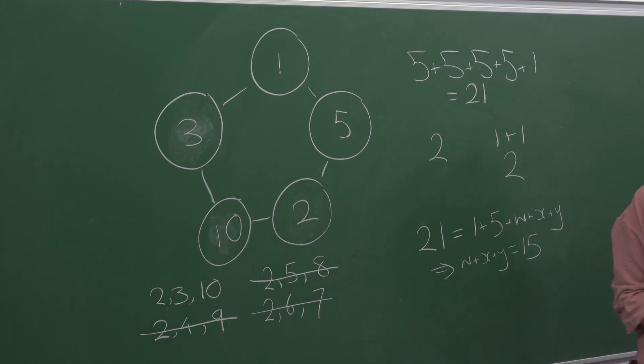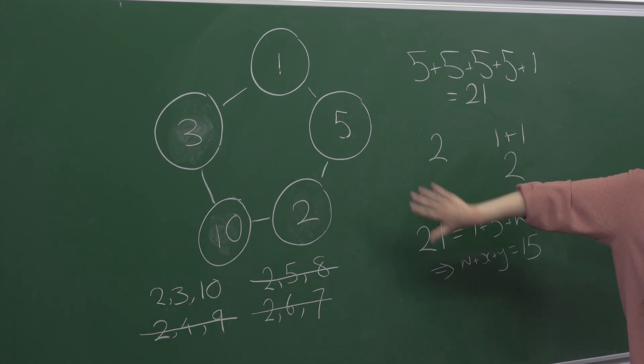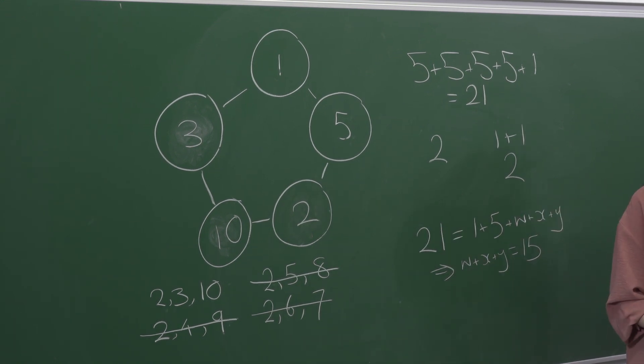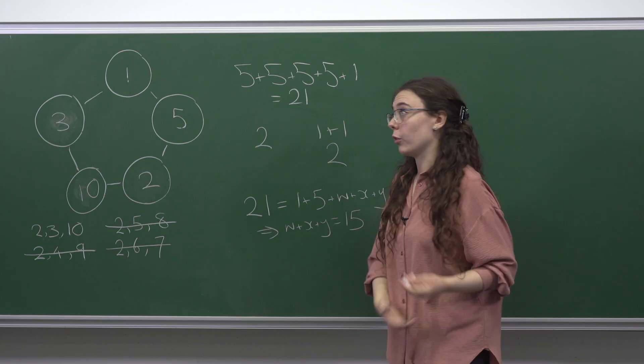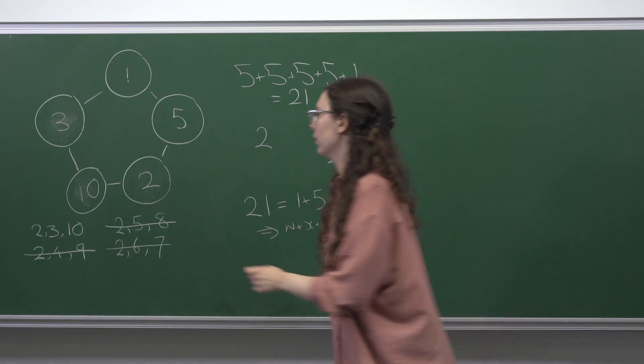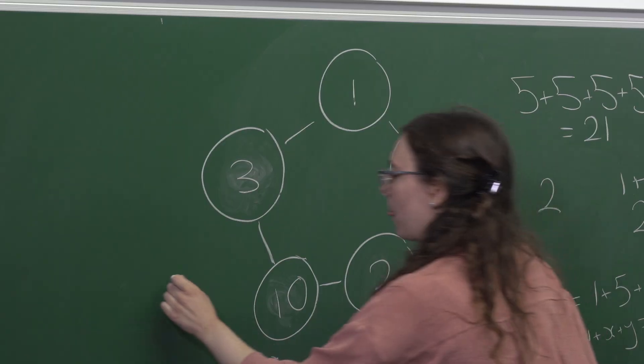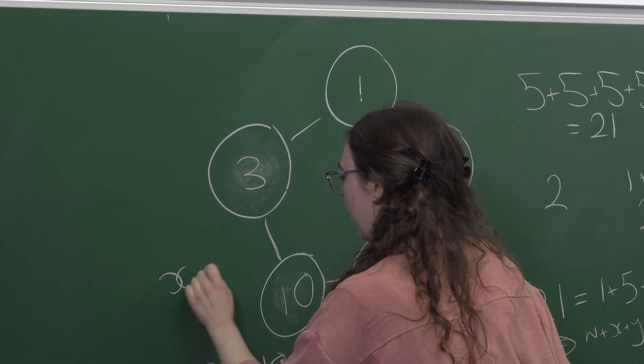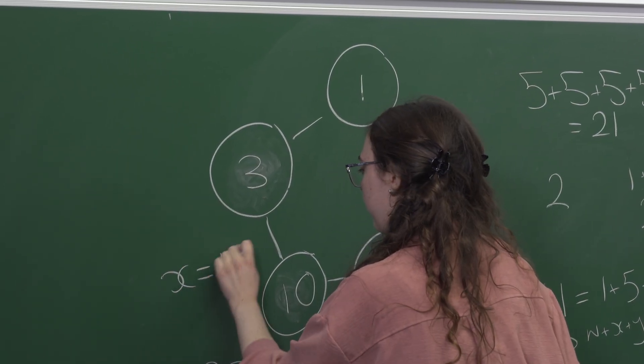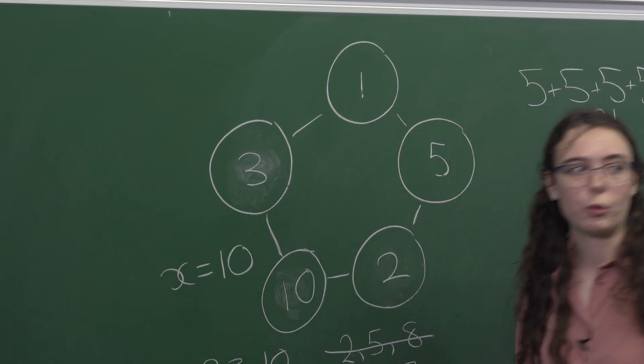I leave it as an exercise to check that you can get all 21 numbers this way. The final answer is that x equals 10.